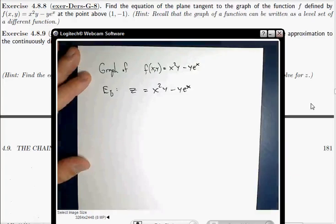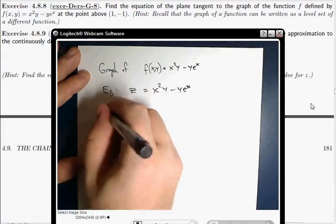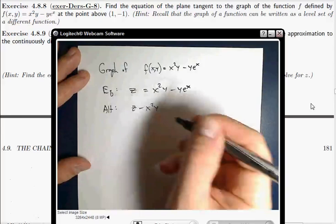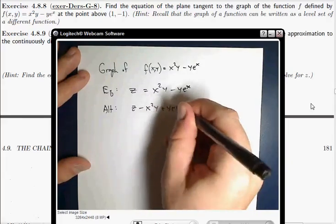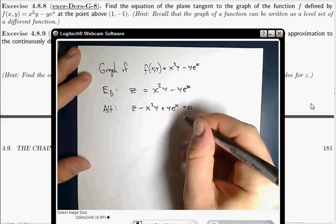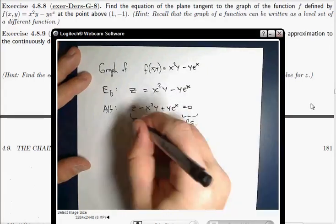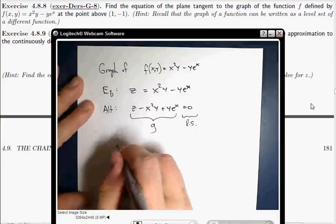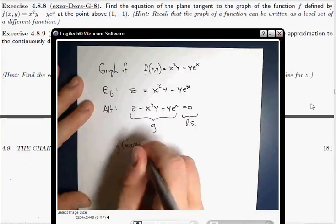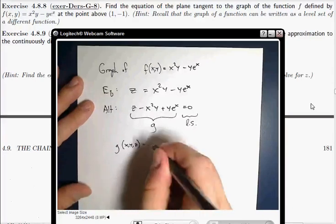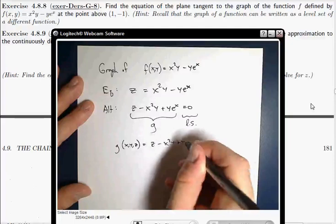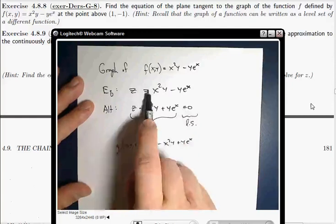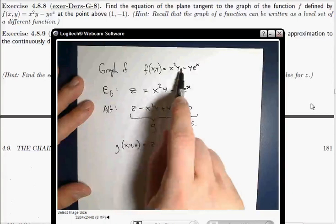Now this equation is equivalent to z minus x squared y plus y e to the x equals zero. And note that this is a level set of this function that I'm going to call g. So I have this new function now, g(x, y, z). This is a function of three variables: z minus x squared y plus y e to the x. This is a function one of whose level sets is the graph of the function that I was given in the first place.